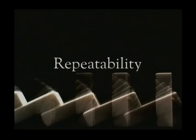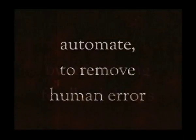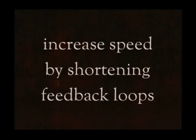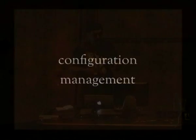The next thing is repeatability. How is repeatability different from consistency? Repeatability is really a function of consistency — it's all about automating to remove human error and increasing speed by shortening feedback loops. A really good example of that is automated application deployments, and configuration management goes hand in hand with that.